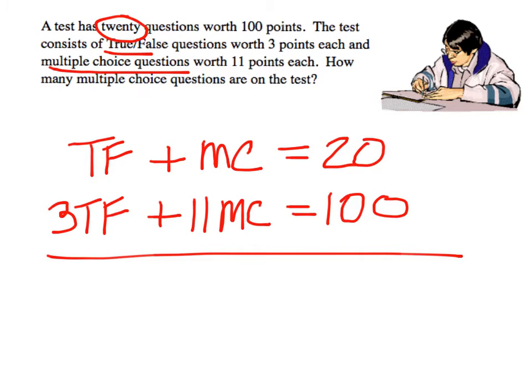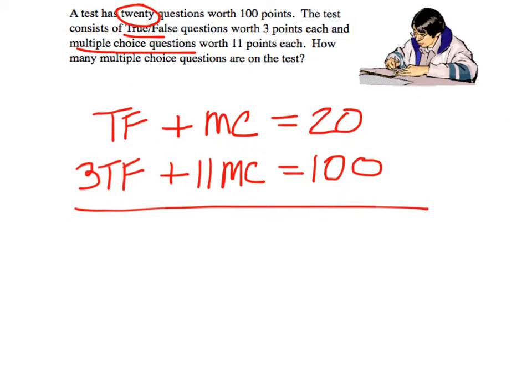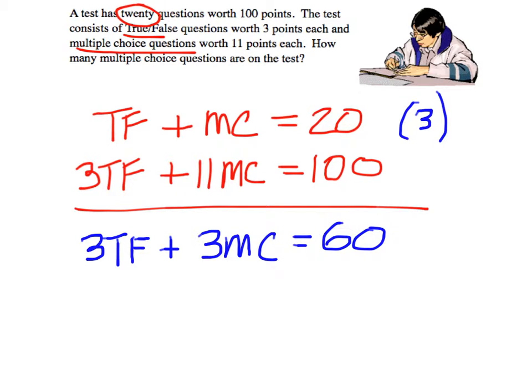The easiest thing to do here would be to multiply by 3 on the top, so that would be 3TF plus 3MC equals 60. And of course the bottom is going to stay the same: 3TF plus 11MC equals 100.